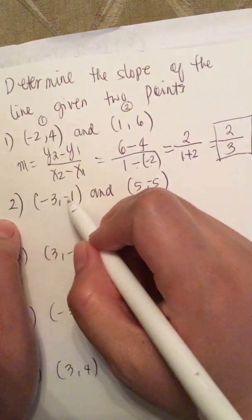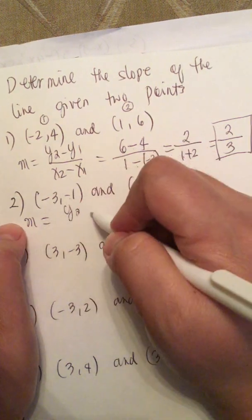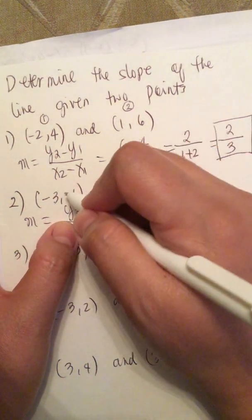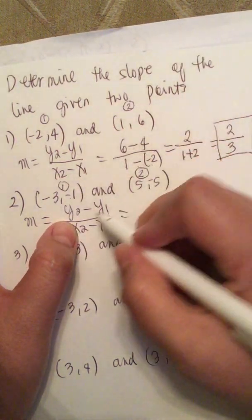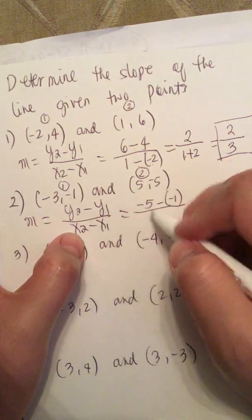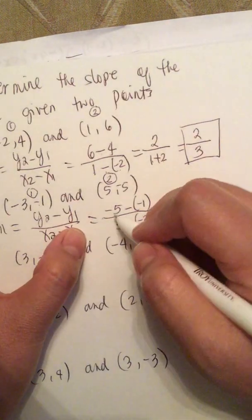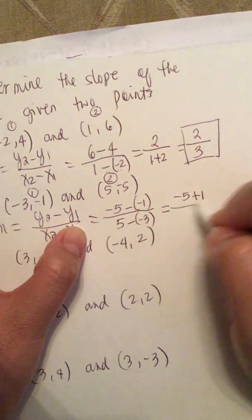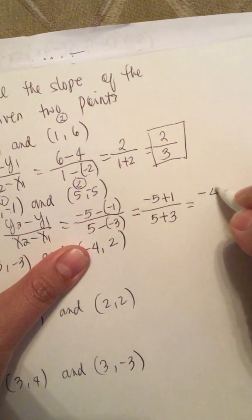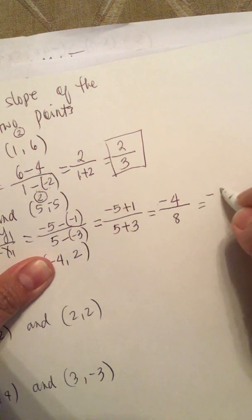The next example is (-3, -1) and (5, -5). We do the same thing using m equals y2 minus y1 over x2 minus x1. Labeling them as point 1 and point 2, y2 is -5 and y1 is -1, over x2 minus x1 which is 5 minus (-3). This gives us -5 plus 1 over 5 plus 3, which equals -4 over 8, so the slope is -1/2.